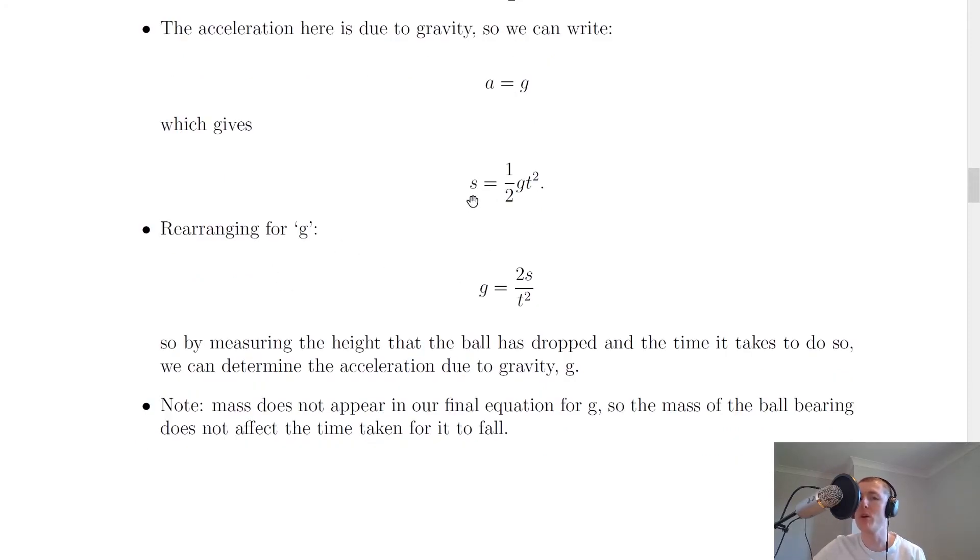And lastly, rearranging for G, we can multiply by two on both sides to get rid of this fraction here. That gives us two S over here, but we've still got this T squared. So if we divide both sides by T squared, then we end up with G equals two S over T squared. And it says here, so by measuring the height that the ball has dropped and the time it takes to do so, we can determine the acceleration due to gravity G.